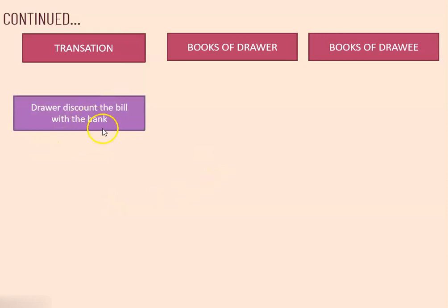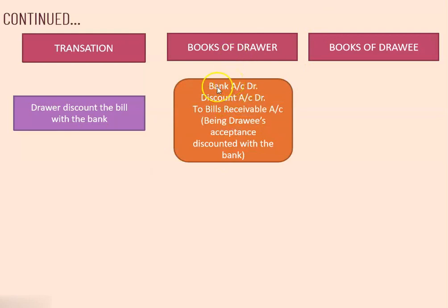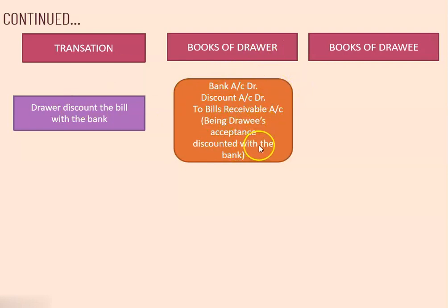Now the drawer will discount the bill with the bank, as the drawer is in need of money. The journal entry is: bank account debited, discount account debited to bills receivable account. Discount account is debited because the amount the bank deducts from the bill is called discount — it is an expense from the drawer's point of view. Bills receivable is credited because the ownership is now transferred to the bank. Narration: being drawee's acceptance discounted with the bank.